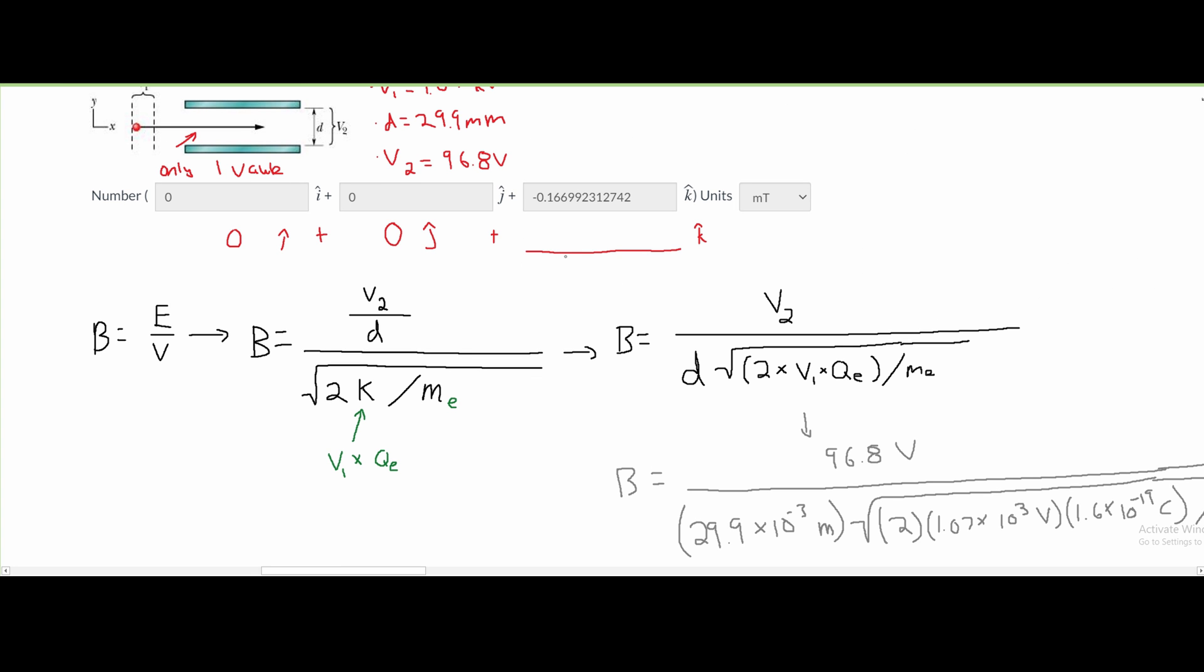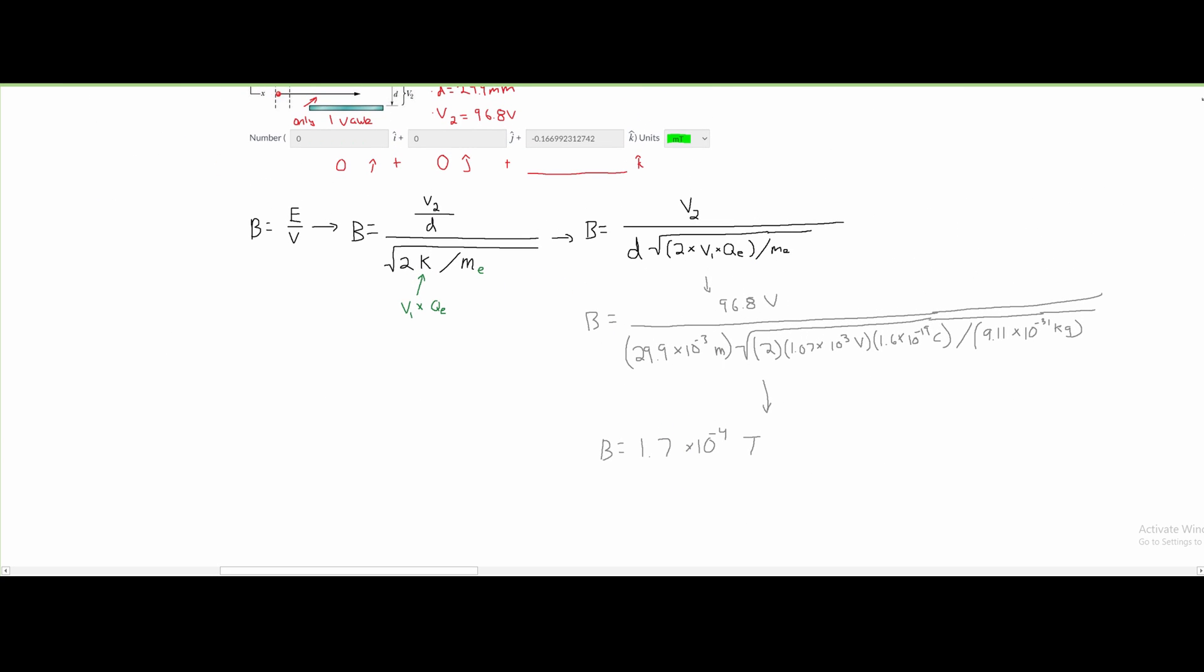In our answer right here, it wants it to be in milliTesla. So therefore, we need to do a conversion right here. This is going to be over 1, and this is going to be multiplied by 1 Tesla, and on top here, we're going to have 10 to the 3 milliTesla.